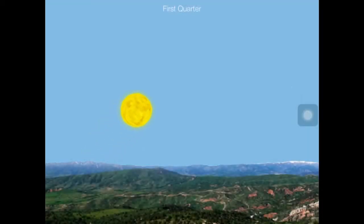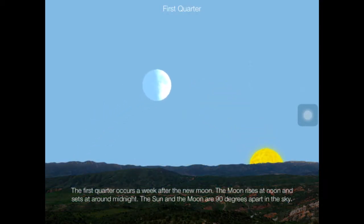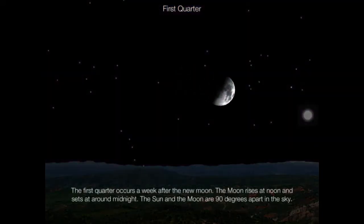The first quarter occurs a week after the new moon. The moon rises at noon and sets around midnight. The sun and the moon are 90 degrees apart in the sky.